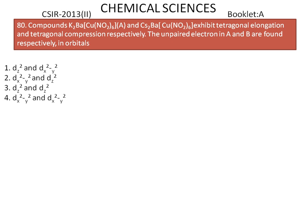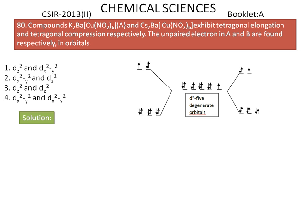In both the complexes, the central metal atom exists as Cu²⁺ ion with a d⁹ configuration. In the presence of ligands, the d⁹ orbitals are split into T2G⁶ and EG³ orbitals. T2G orbitals are symmetrically filled, whereas EG orbitals are unsymmetrically filled. So it will have strong Jahn-Teller distortion, and the structure will not be regular octahedral — it will be distorted tetragonal.